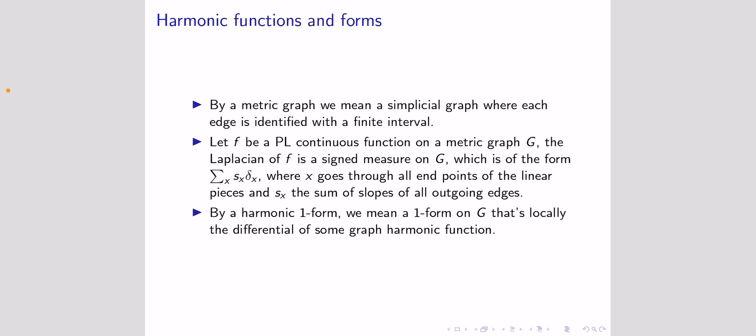As we can see, if the metric graph is finite then a graph harmonic function has to be constant on each connected component. On the other hand, for infinite metric graphs there can be non-trivial graph harmonic functions. Related to this, we can also define graph harmonic one-forms: a one-form is graph harmonic if it is locally the derivative of some graph harmonic function. For example, if we have a circle — a graph with one vertex and one edge — we can have a constant one-form on it.